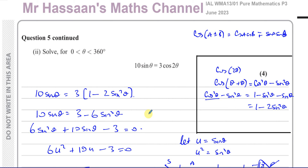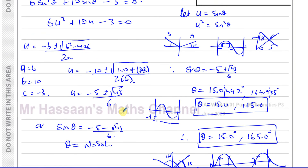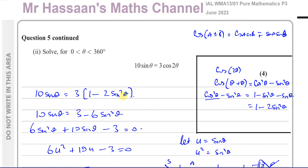That concludes question five from this paper — a fairly straightforward trigonometry question for P3. Other questions from this paper can be found in the playlist at the top of the page, and other trig identities and equations questions are in the playlist shown on screen. Subscribe by clicking the link, and thank you for watching — see you soon.